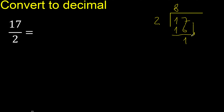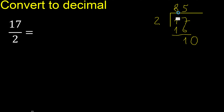There is no number that goes down, therefore always complete with 0 — giving 10. 2 multiplied by which number? Multiply by 6 is 12, which is greater. Complete with 0 and complete the decimal point.